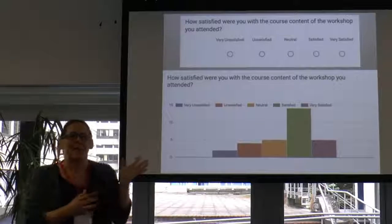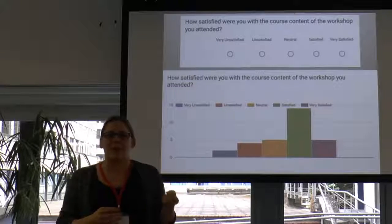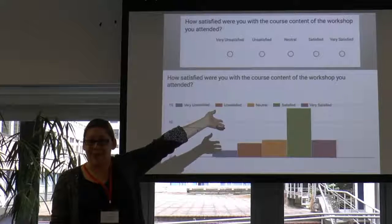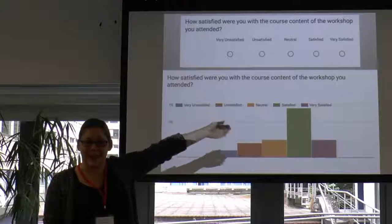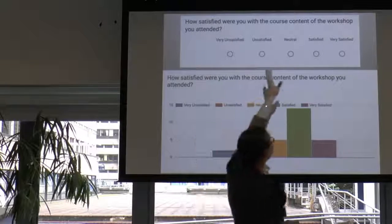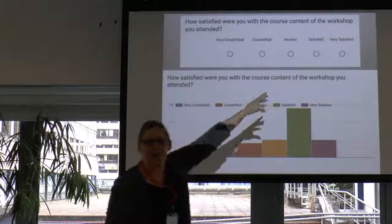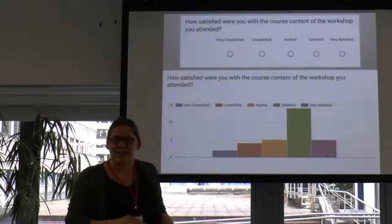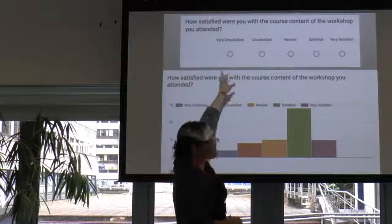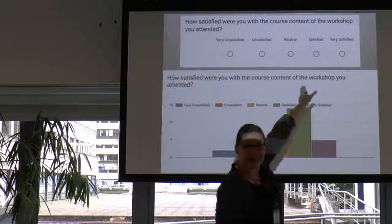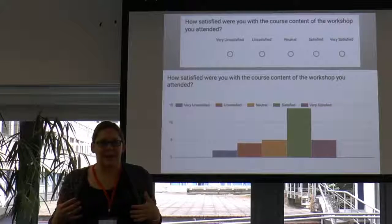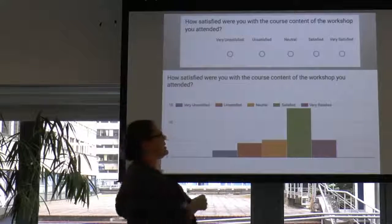I love talking about Likert scales because they're such a great example of the clash between qualitative and quantitative. What often happens is we don't know what to do with the data once we have it. Researchers will often collapse categories — 'satisfied' is all we care about, so we smush those two together. Or we assign numbers: very unsatisfied is one, unsatisfied is two, neutral is three. But who's to say the distance between categories is always exactly one?